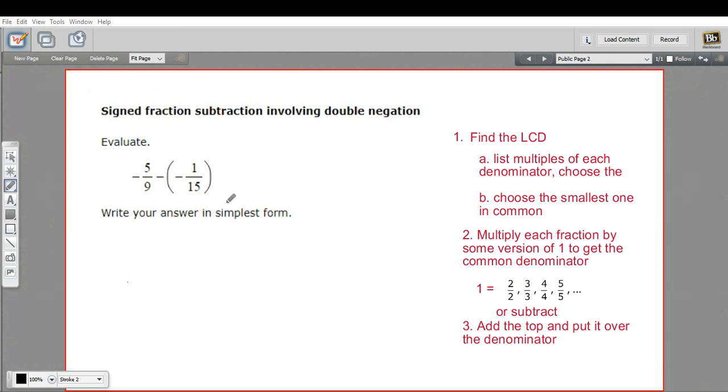So this looks pretty complicated, but actually, a double negative is kind of a good thing because subtracting a negative is the same thing as just adding. When I see two negative signs in a row like that, I just turn them into pluses. So really, this problem is negative 5 ninths plus 1 fifteenth.